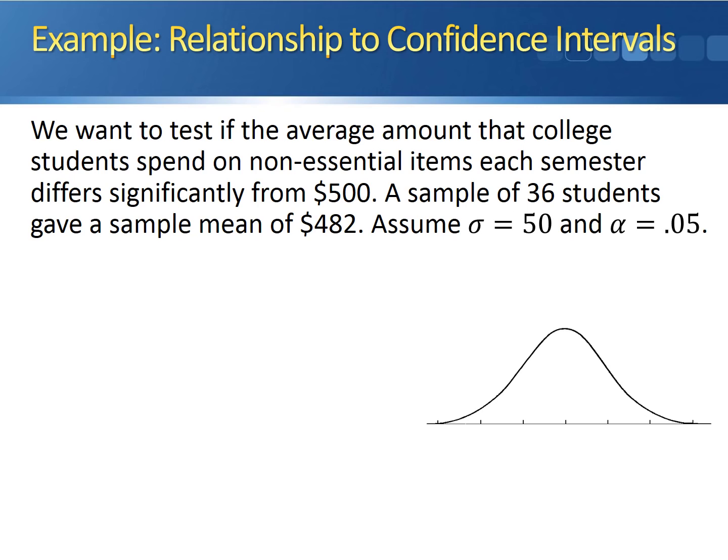Since we want to see if there's a significant difference, the null hypothesis is going to be μ = 500, and the alternative hypothesis will be μ ≠ 500.